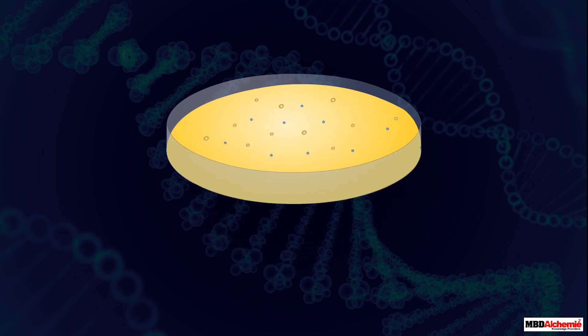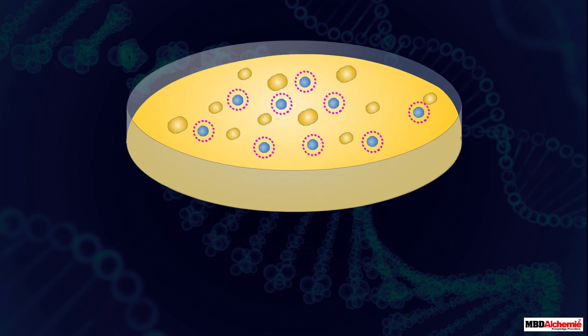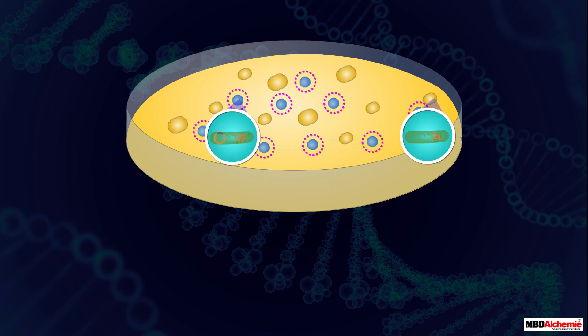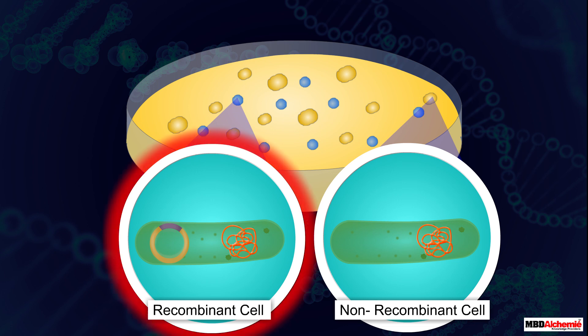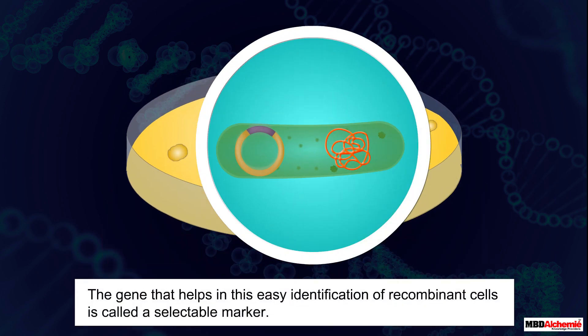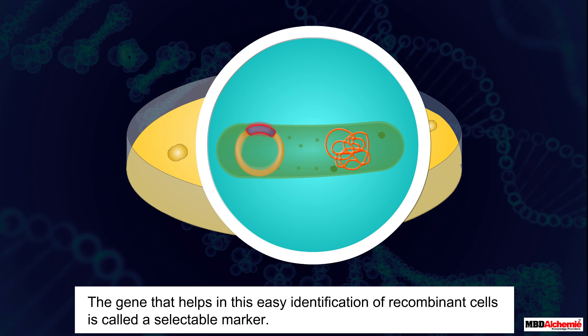When they are transferred to a culture plate that contains ampicillin, only the E. coli cells that are resistant to ampicillin will grow. We can easily use this method to identify which cells are recombinant. The gene that helps in this easy identification of recombinant cells is called a selectable marker.